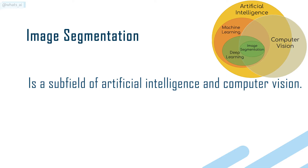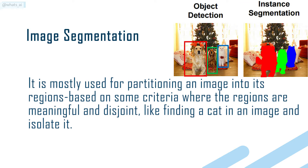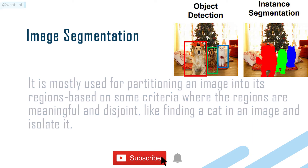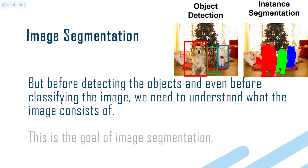Image segmentation is a subfield of artificial intelligence and computer vision. It is typically used to locate objects and boundaries in images. It is mostly used for partitioning an image into its regions based on some criteria, where the regions are meaningful and disjoint — like finding a cat in an image and isolating it. But before detecting objects, and even before classifying the image, we need to understand what the image consists of. This is the goal of image segmentation.